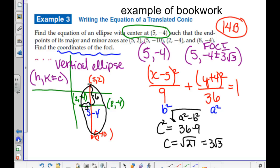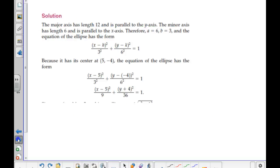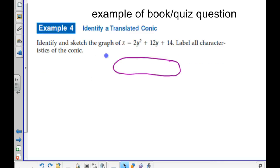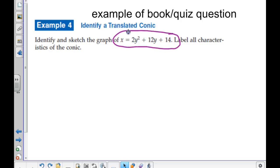All right, one more example. Can you guys write this down and try to graph this conic right here? X equals 2Y squared plus 12Y plus 14.